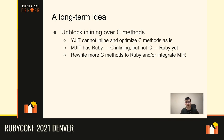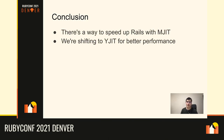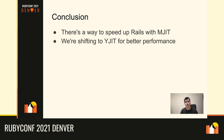In conclusion, there is a way to speed up Rails with MJIT — although many benchmarks show MJIT making things slower, you need to be careful about many things to make MJIT work faster than the interpreter. We are shifting towards YJIT for better performance, since YJIT already achieves faster performance than MJIT and has many more developers working on it. That's it — thank you for listening.